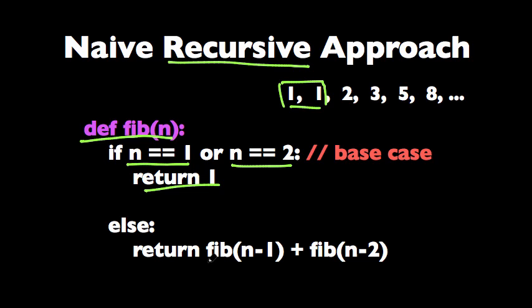If that's not the case, we're just going to return the sum of the previous element and the second previous element. So this approach works, but the thing is this is very inefficient. Let's see why that's the case.